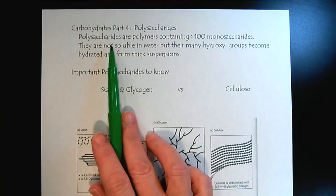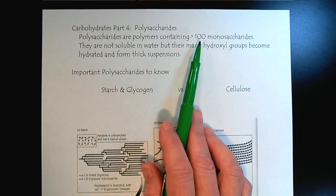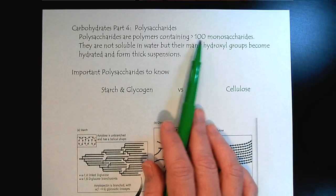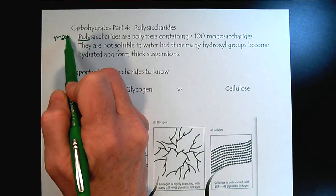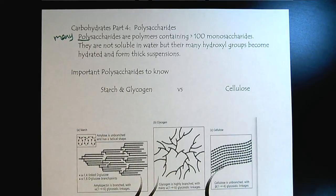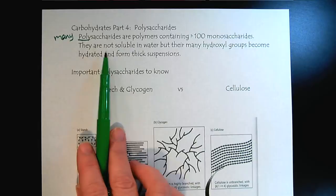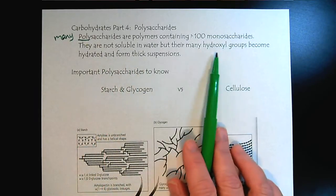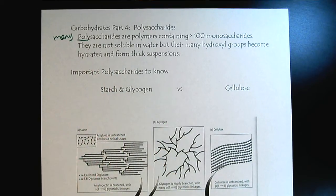Alrighty, so polysaccharides are basically polymers, and I know in the previous notes I said 10 monosaccharides, and this is just a good example I took from two different books. So basically, poly, many, many sugars linked together. And because there are so many sugars linked together, they are no longer soluble in water. But the hydroxyl groups can be hydrated, and so they often form thick suspensions.